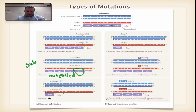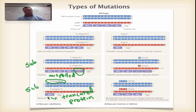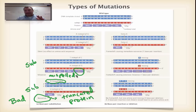Now we have something interesting down here. This one is still a substitution — we've substituted an A instead of a T — but we've made a stop codon at the wrong place. Now our protein only has one amino acid. This is what we call a truncated protein. Truncated is a fancy word that means short. A protein with only one amino acid doesn't have the right shape and is not going to work. These nonsense mutations are bad.